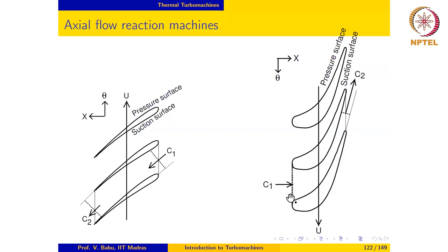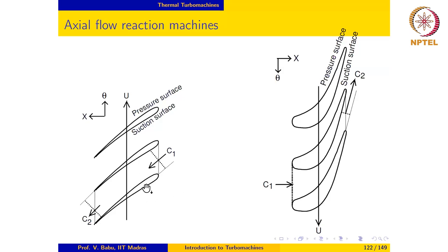In a turbine, by contrast, the pressure gradient is favorable in the direction of flow because pressure decreases, and we can have as high a pressure drop as we like in the turbine blade passage. Since the pressure drop can be high, the work transfer in a turbine rotor is also very high, which is why turbine blades are thicker than compressor blades. Flow turning is also much higher for turbine blades, while pressure rise — and consequently work transfer and flow turning — are minimal for a compressor rotor.